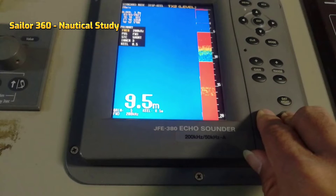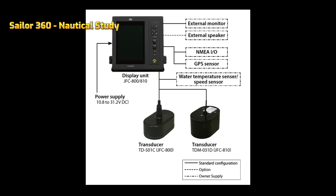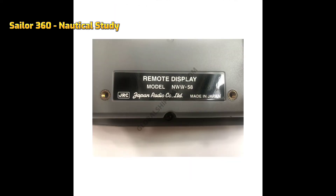The echo sounder data is also fed into other equipment, such as ECDIS, so we can see the UKC directly from the ECDIS display as it receives data from the echo sounder. I hope this is helpful for you. Here you can see a display unit of an echo sounder of a ship, along with the diagram and the remote display unit.